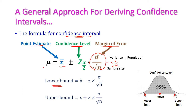The lower bound is equal to x-bar minus z times sigma divided by root n, and the upper bound is x-bar plus z times sigma divided by root n. If it is the lower bound then we subtract the margin of error from x-bar, and when computing the upper bound we add the two values.